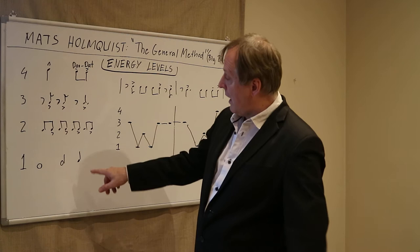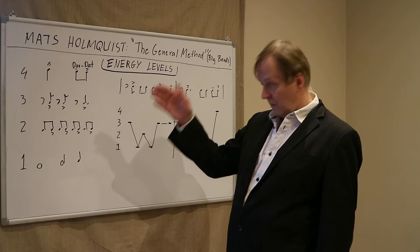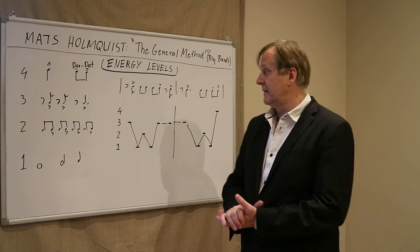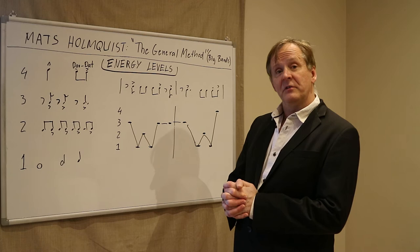The first level are notes on unemphasized downbeats - notes that happen on the downbeat. It doesn't matter what note value it is, long or short. The second level is what I call jazz eighths, where most of you know that the syncopation, the offbeat, is usually more emphasized.